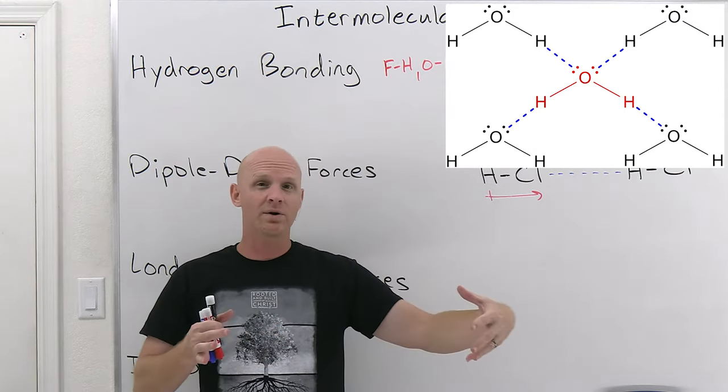Higher intermolecular forces also lead to higher surface tension. At the surface of a liquid, there's a network of intermolecular forces — like hydrogen bonding on the surface of water. A water bug can walk on water by spreading its tiny weight over a large surface area without puncturing that hydrogen bonding network. That's also why you can fill a glass of water slightly above the rim when adding water drop by drop — that's a function of surface tension.